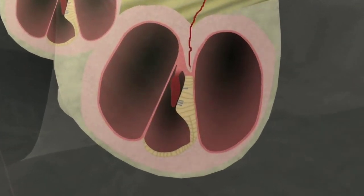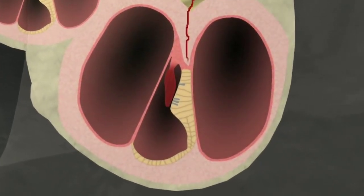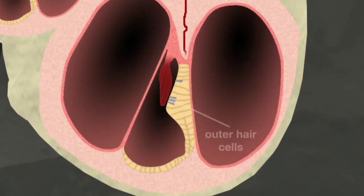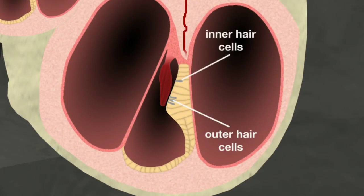Along the basilar membrane are two types of sensory cells, or hair cells, called the outer and inner hair cells. These are arranged in their rows according to the frequency or pitch of sound they detect and covered by the tectorial membrane.